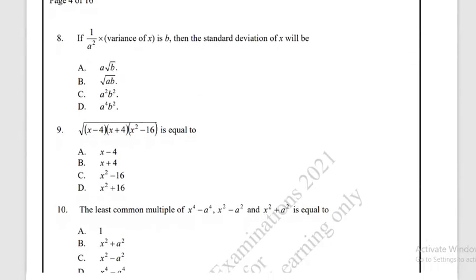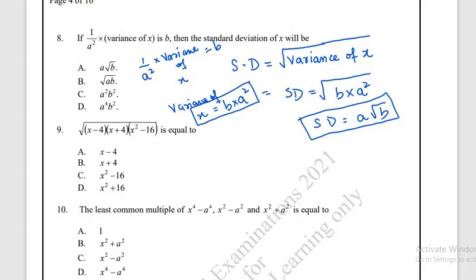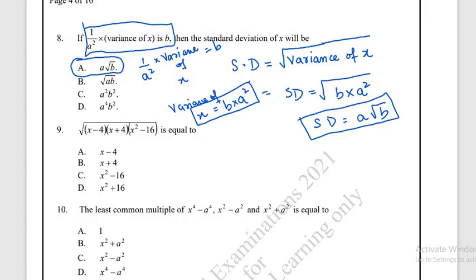Question number 8: if (1/a²) × variance of x = b, then we need to find the standard deviation of x. This means variance of x = b × a². Since standard deviation equals the square root of variance, the standard deviation equals a√b. The correct answer is option A: a√b.